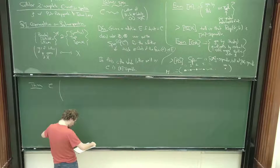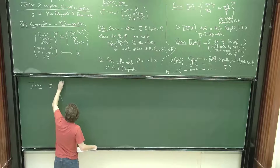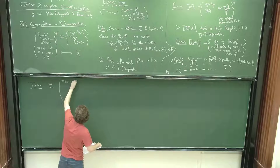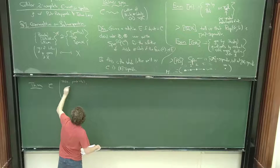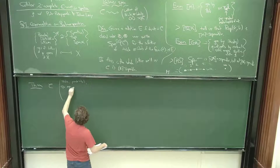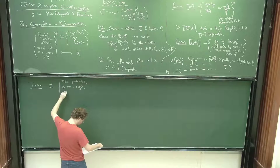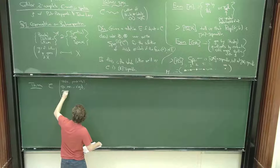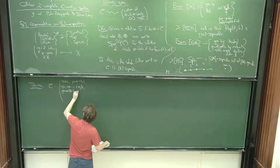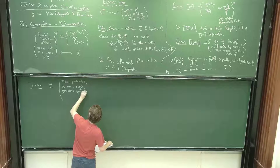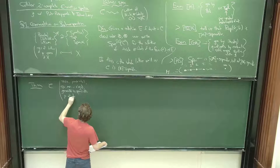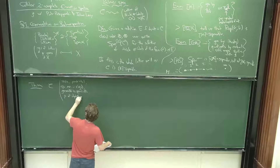Suppose C is stable, pseudo-unital, symmetric monoidal, rigid, generated by compact elements, and P acts in a nilpotent way on every object.